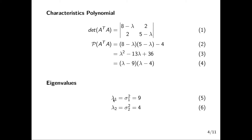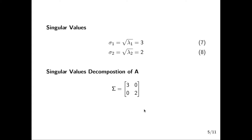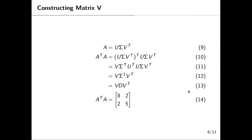That gives us our eigenvalues: lambda one and lambda two. Lambda one is the same as sigma one squared — that's the first singular value squared — and lambda two is the same as the second singular value squared, which are nine and four respectively. When you find the square root of lambda one and lambda two, you get our singular values. To obtain our Sigma matrix, we replace the diagonals with the singular values as seen here.